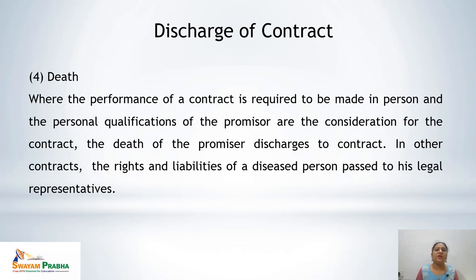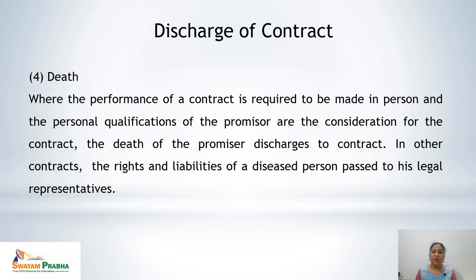Fourth under operation of law is death. If any party is dead, there is an automatic discharge of contract, specifically where the performance is required to be made in person and the personal qualifications of the promisor are the consideration for the contract. The death of the promisor discharges the contract in those cases where presence and personal qualification are required. In other contracts, the rights and liabilities of a deceased person pass to his legal representatives.